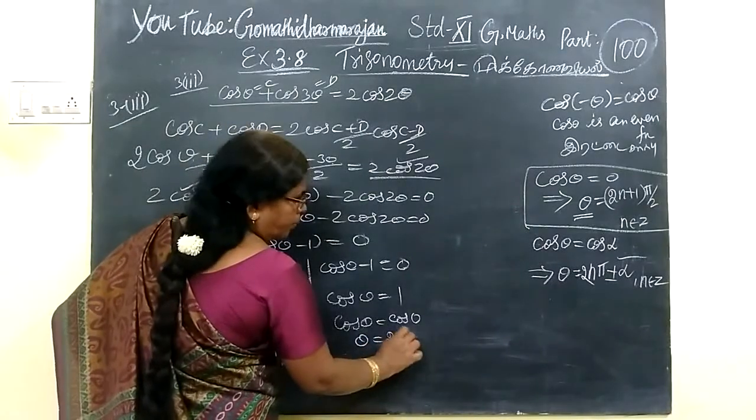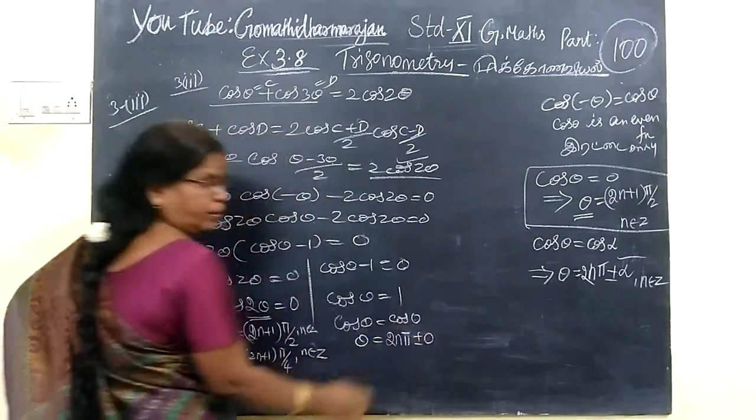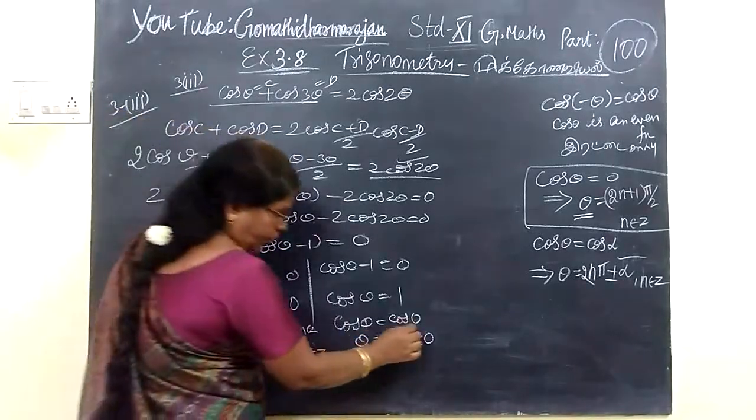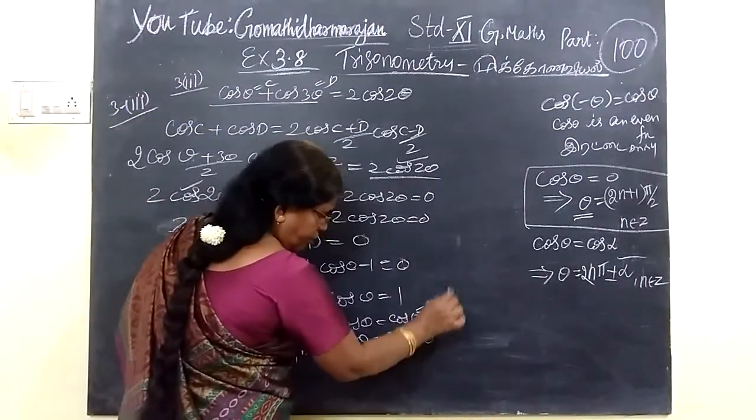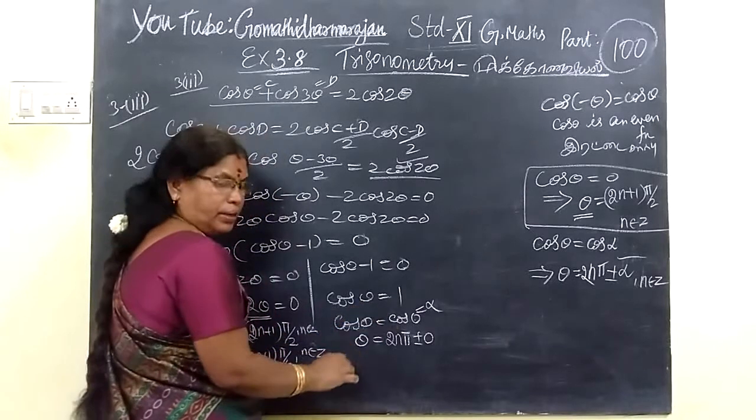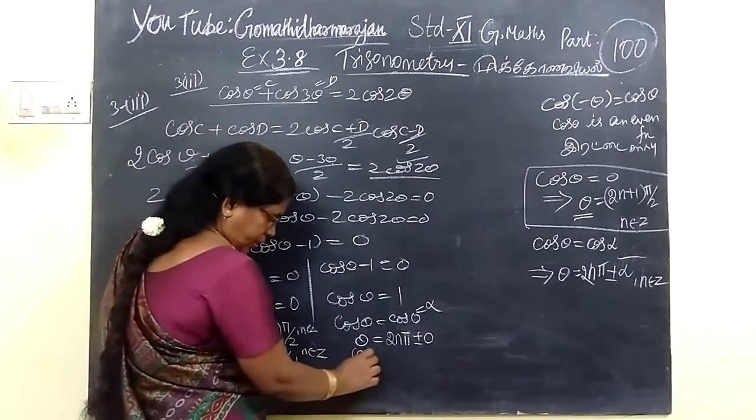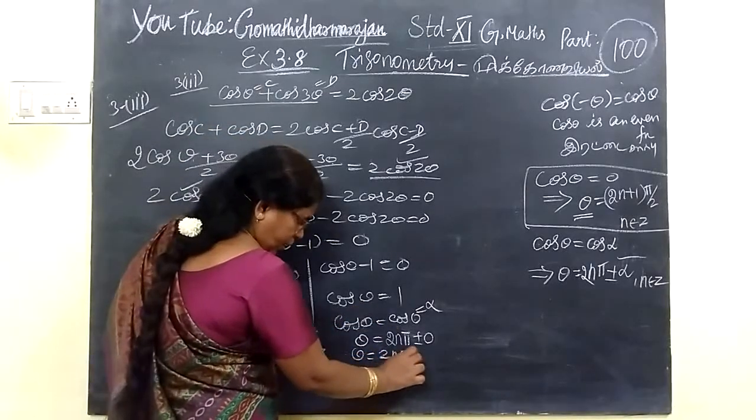θ equals 2nπ plus or minus 0. Alpha is 0, θ is 0. So it implies θ is equal to 2nπ.